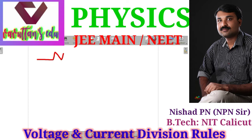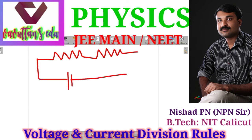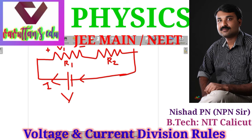This is called current division rule. You can apply this concept. Now applying this to voltage: voltage value V is equal to the voltage from the positive terminal to the negative terminal. Current leaves from the positive terminal and enters through the negative terminal. This resistance value R1 has voltage V1 across it, and R2 has voltage V2. This is the polarity mark, plus and minus.